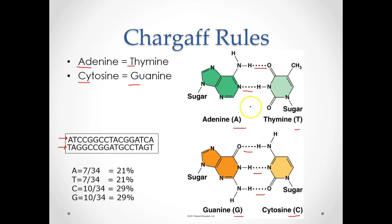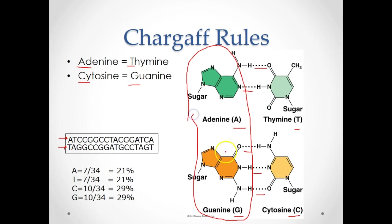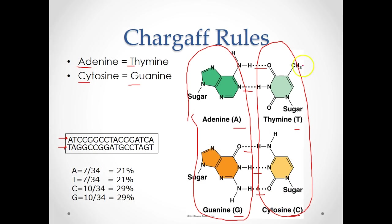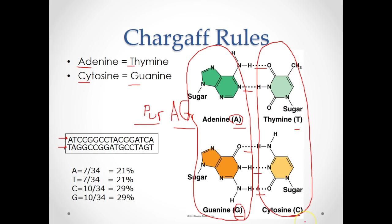Adenine and guanine are double-ringed structures called purines, while thymine and cytosine are single-ringed structures called pyrimidines. Purines are the larger bases and pyrimidines are the smaller bases. A mnemonic to remember: Kansas is a purely agricultural state — 'pure ag' — A and G are purines and are the largest bases. By default, T and C are the pyrimidines and the complementary base pairs.